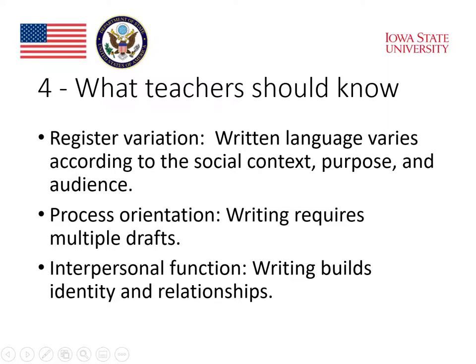The three critical aspects of writing are register variation, process orientation, and interpersonal function. Register variation refers to the fact that written language varies according to the social context, purpose, and audience. We saw the example of how the language choice has to be different depending on whether you're talking about your research to a friend or introducing your research to a professional audience of journal readers.